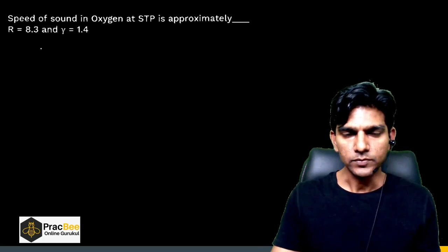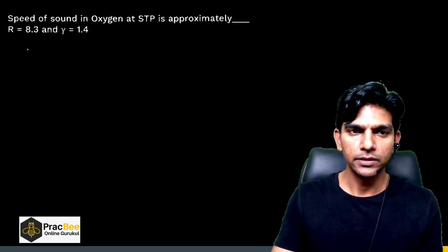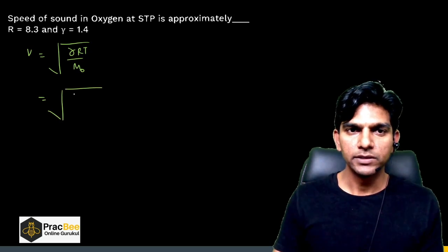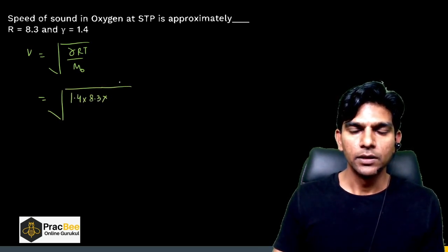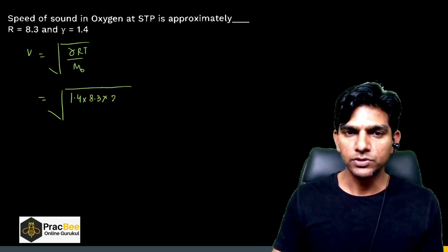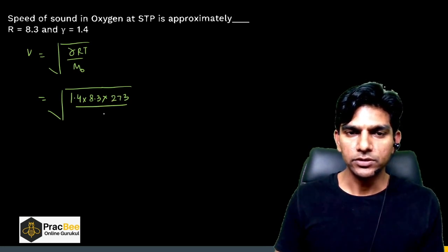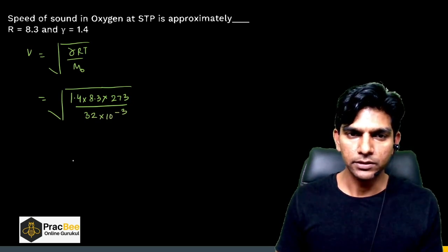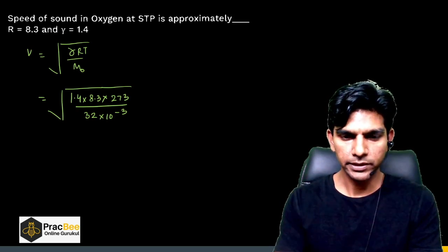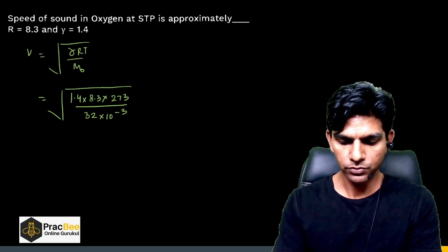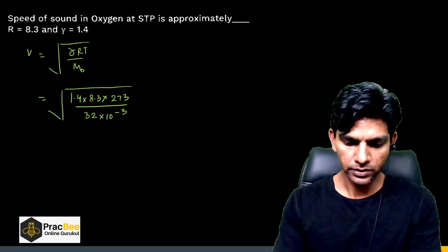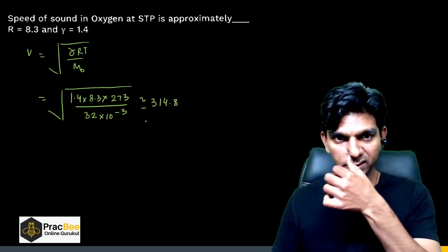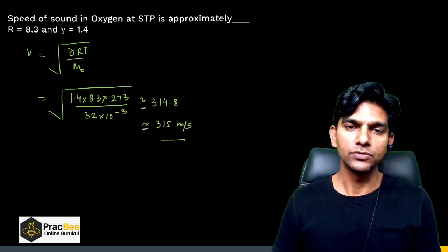The next question is from Waves — speed of sound in a gas. The formula is v = √(γRT/M₀). With γ = 1.4, R = 8.3 J/mol·K, T = 273 K at STP, and molar mass of oxygen M₀ = 32 × 10⁻³ kg/mol, calculating: √(1.4 × 8.3 × 273 × 1000 / 32) ≈ 314.8 m/s. For an integer-type answer, this is 315 m/s.